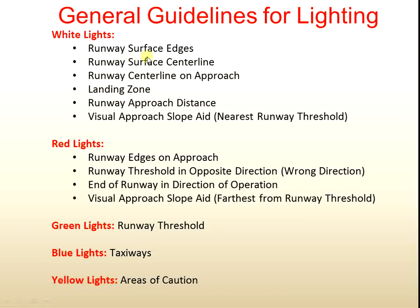White lights are used for runway surface edges, runway surface center line, runway center line on approach, landing zone, runway approach distance, and nearest runway threshold. Red lights are used for the runway on approach, runway threshold in the opposite or wrong direction, end of runway in direction of operation, blast pair, and visual approach slope edge — the first section from the runway threshold. Green lights are used for the runway threshold.